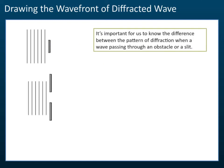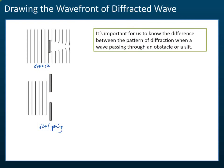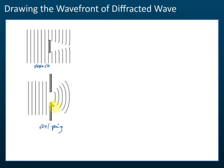So the correct one should be something like this. It's important for us to know the difference between the patterns of diffraction when a wave passes through an obstacle or a slit. The pattern is different for these two cases. For obstacles, the wave will spread after passing through the obstacle — it will spread here and spread here. And for a slit or opening, it will spread like this. Make sure that you know the difference.